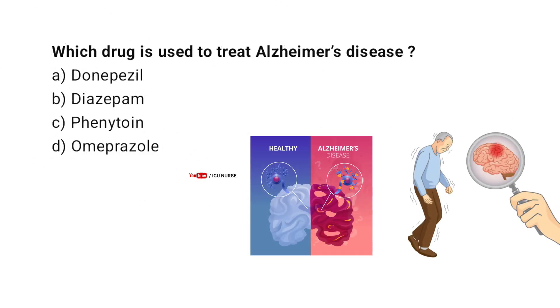Which drug is used to treat Alzheimer's disease? A. Donepezil. B. Diazepam. C. Phenytoin. D. Omeprazole. Correct answer.